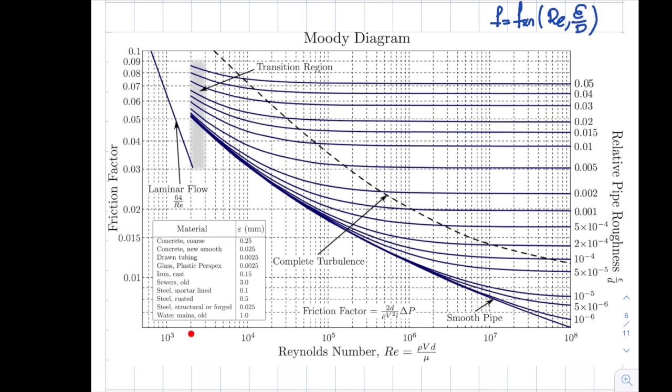The second region that's defined from here, from 2000 to 3000, I called in my note 2500, it just depends how you want to envision it, is the transition region. And you can see in this transition region the f value is a function of epsilon over D. Let's say that my value is 0.01, so basically I track this line. I go all the way to here, then I read depending on my Reynolds number, I read a value and I go to here and I read that particular f value.